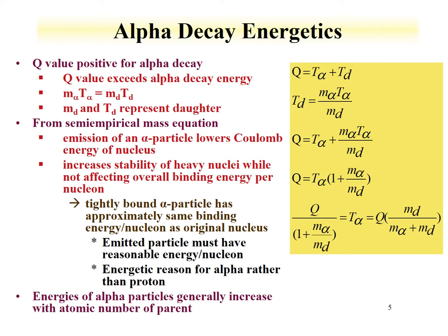The alpha decay energetics allows us to calculate the Q value and the alpha decay energy for a given isotope. We know that the Q value often exceeds the alpha decay energy, and this is due to the fact that the Q value is the total energy of the system — the kinetic energy of both the alpha particle and the daughter. The momenta are equal and opposite, so we can use the equation: mass times kinetic energy for the alpha equals mass times the kinetic energy of the daughter.